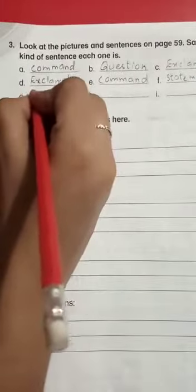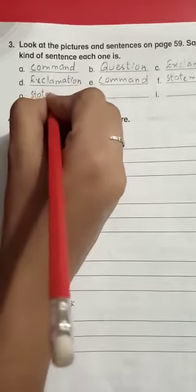For F and G, we write statement — S-T-A-T-E-M-E-N-T. H was a question — Q-U-E-S-T-I-O-N. And I was a command — C-O-M-M-A-N-D.